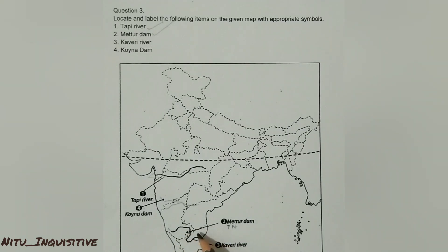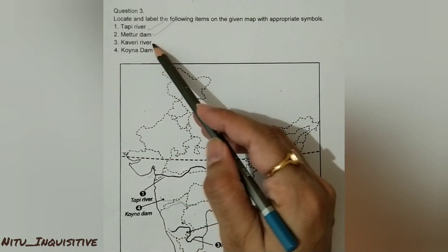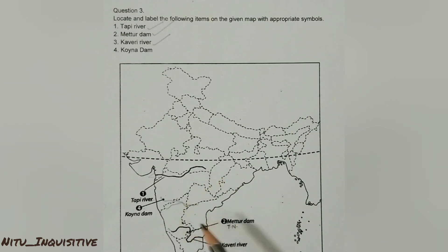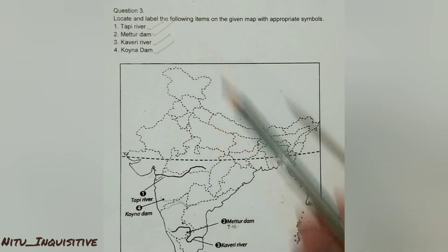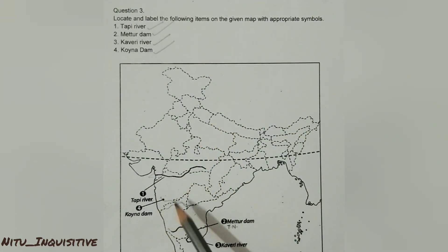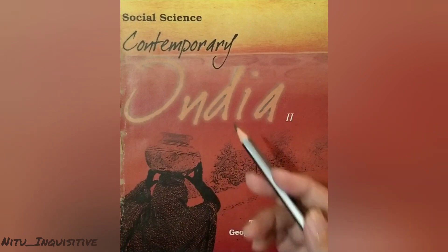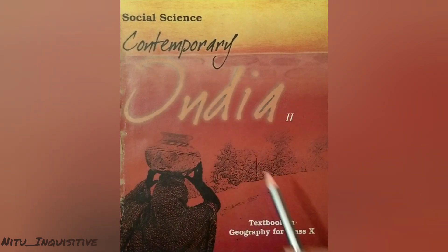Next is the Kaveri River. The Kaveri River is one of the southernmost rivers of India. Next is Koyna Dam, which is in Maharashtra, located on the Koyna River. If you like this content, please do like this video and subscribe to this channel for upcoming videos. Thanks for watching.